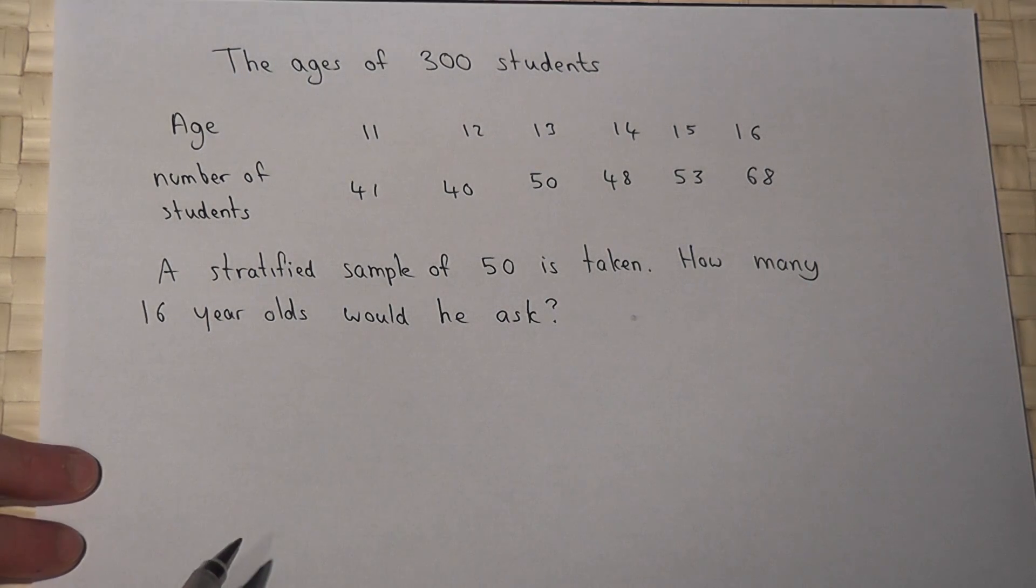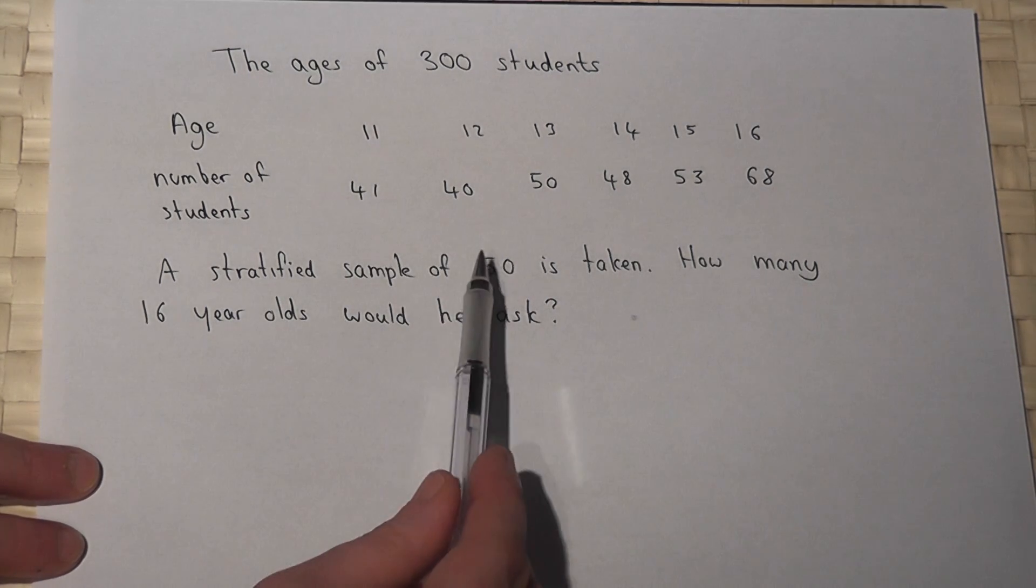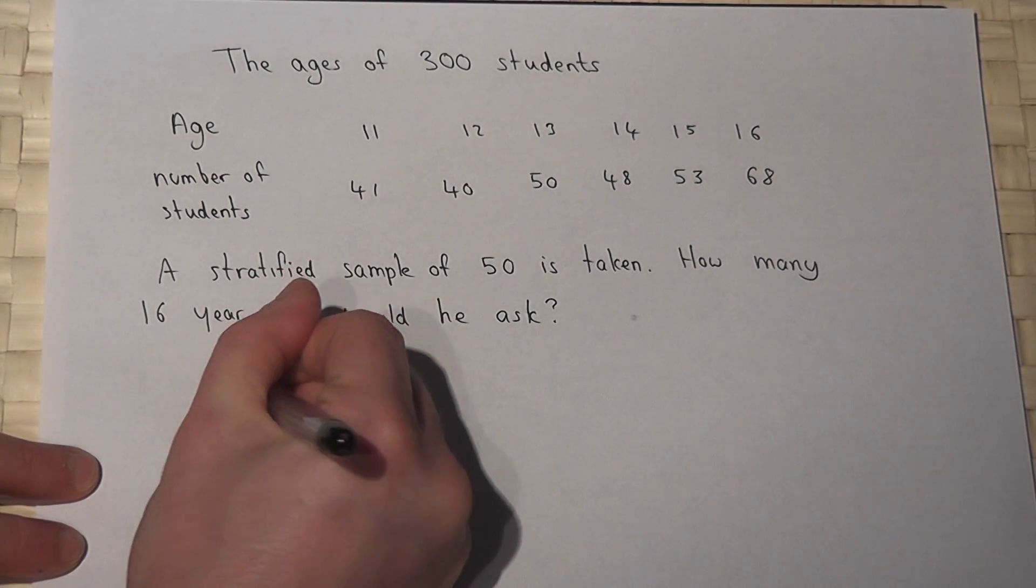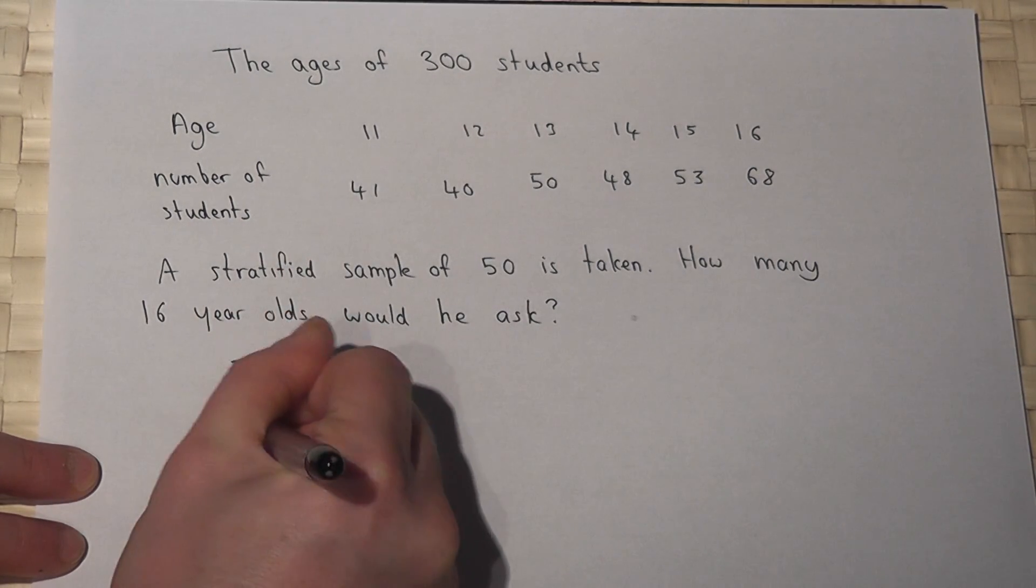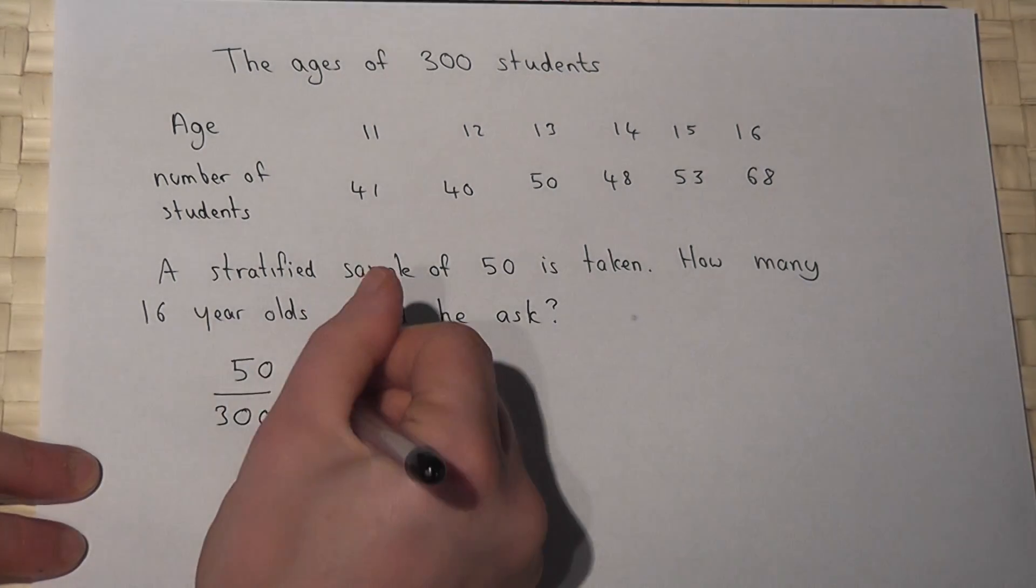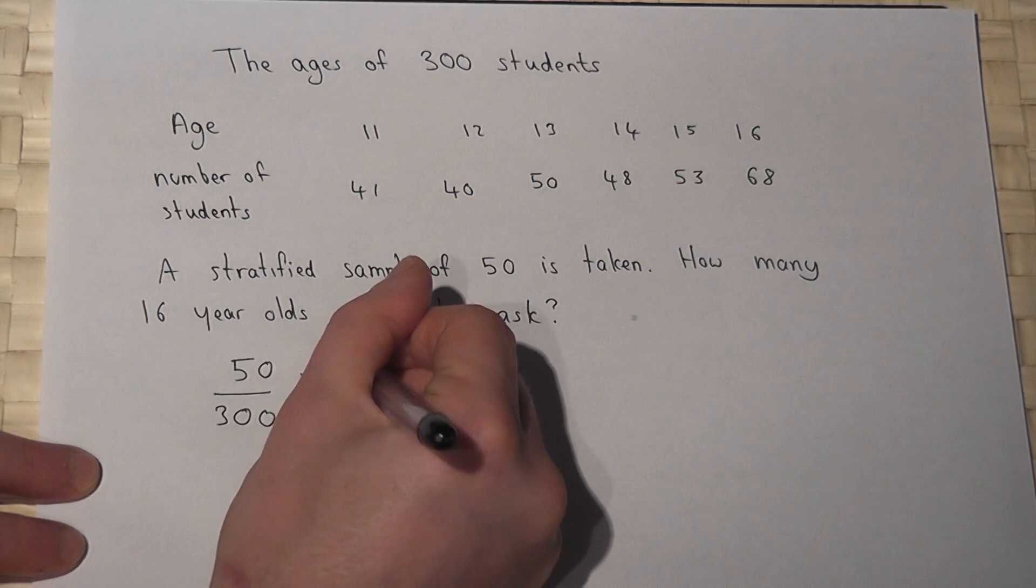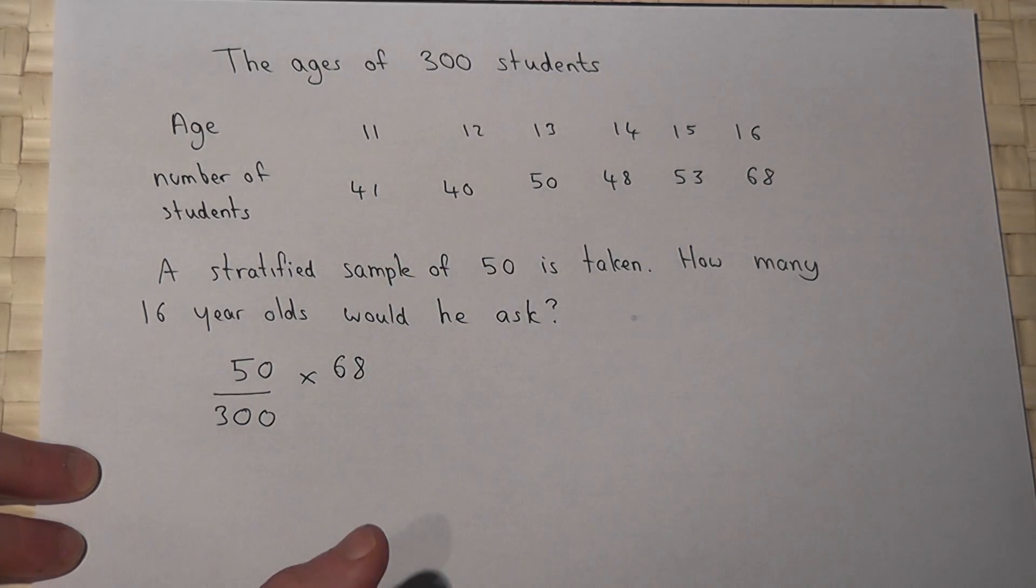Now the method here is to think what fraction of 300 is 50. 50 over 300 is the fraction. If we times this by the total number of students in the age range and work out that calculation...